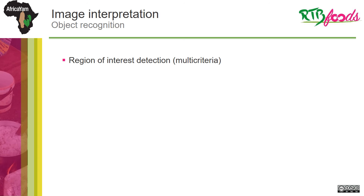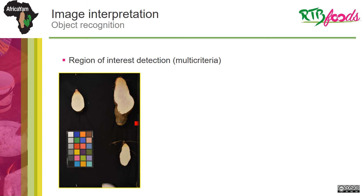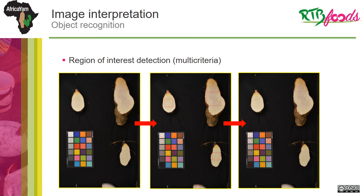But when the objects of interest are more heterogeneous, it is possible to detect them using a multi-criteria approach based, for example, on the size, shape, and color of the object. This allows, for example, to detect color patches of the reference chart in order to test repeatability and quantify the measurement error within a study.